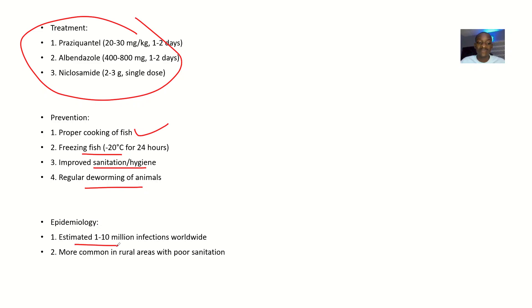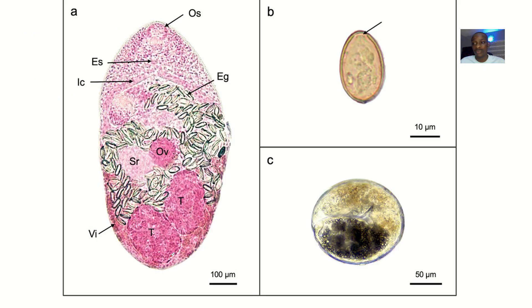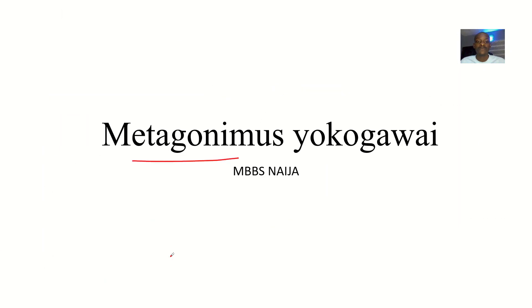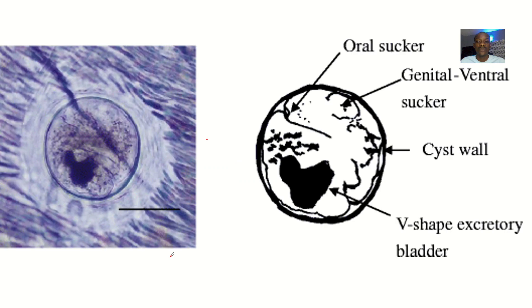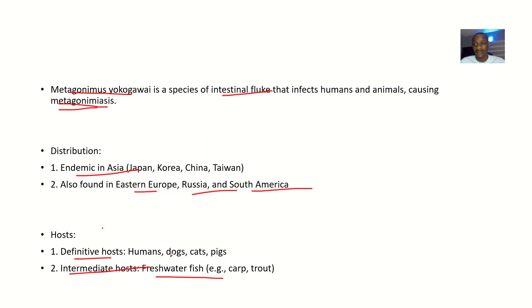Epidemiology: an estimated 1 to 10 million people are infected by this disease worldwide, and it is more common in rural areas with very poor sanitation. So one way to overcome this is proper sanitation. That's it for Metagonimus yokogawai.